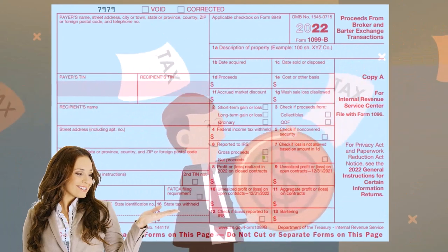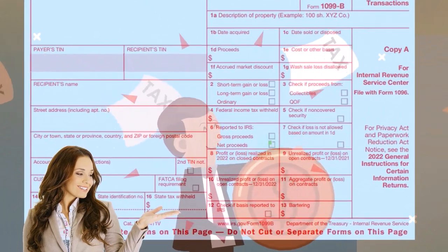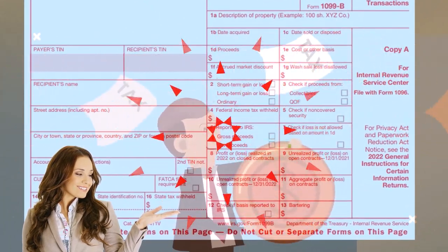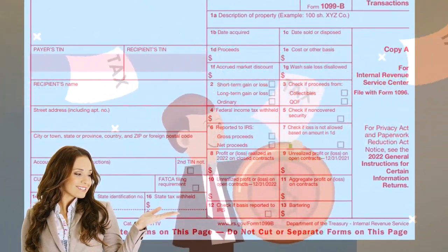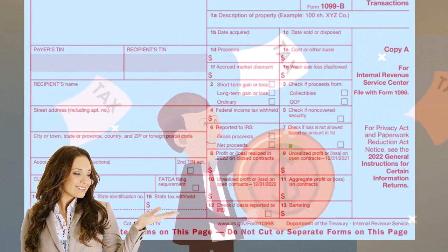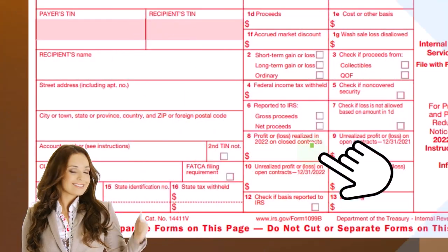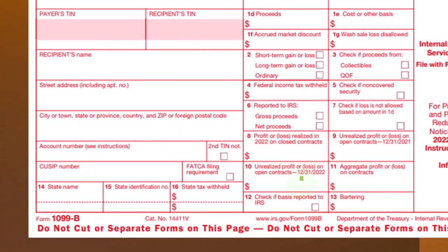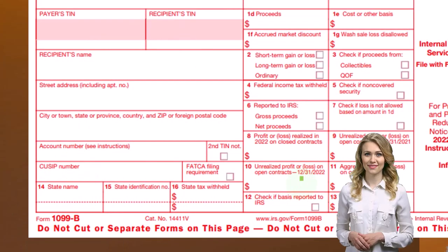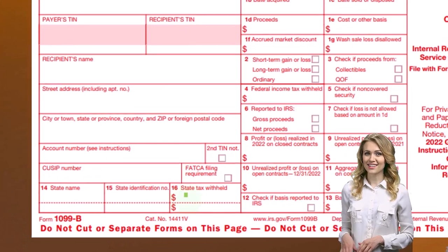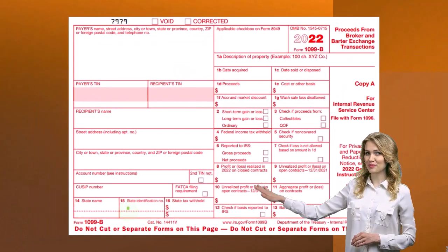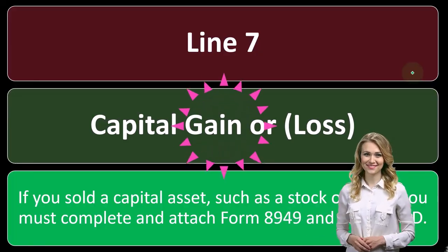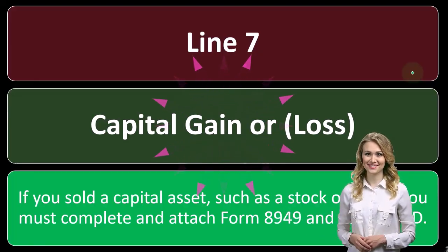In any case, the reports to the IRS cover gross proceeds versus net proceeds, whether the loss is not allowed, profit or loss realized, unrealized profit, and so on. Those are the main boxes. You can also have the state. Line seven is capital gain or loss.